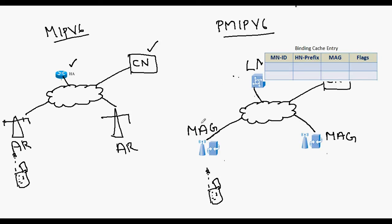In Proxy Mobile IPv6 the mobile access gateway acts as a proxy for the mobile node, so the details of the mobile access gateway are present in the binding cache entry. In Mobile IPv6 the binding cache entry had details like care-of address — essentially details used to reach the mobile node. Here, the care-of address will be the address of the MAG, because the MAG is acting as a proxy for the mobile node, and those details are stored in the binding cache entry.